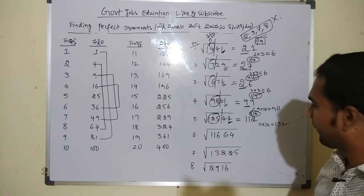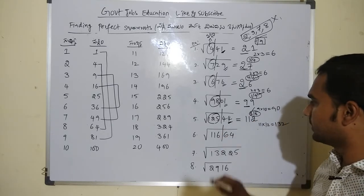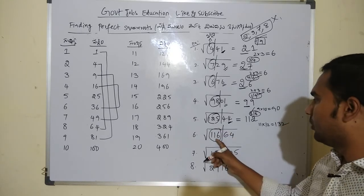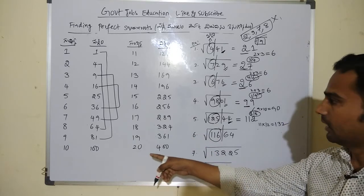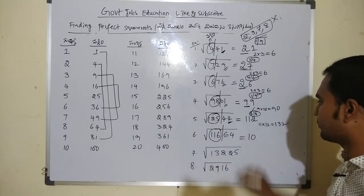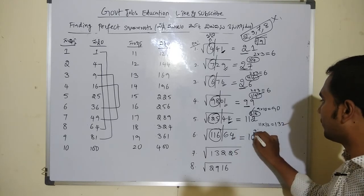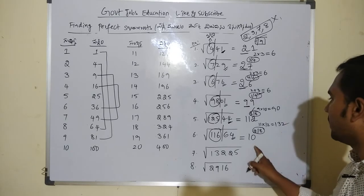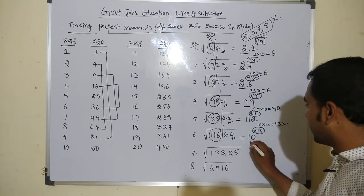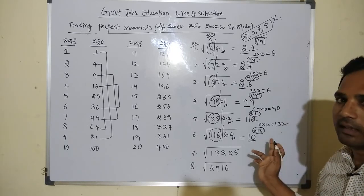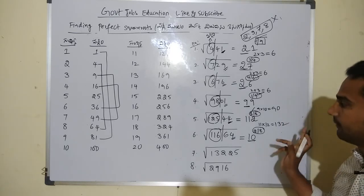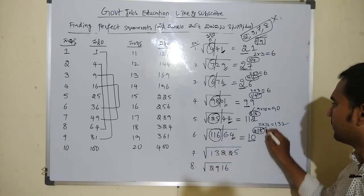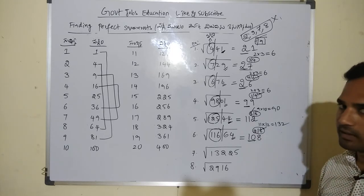Problem: 11664. Left side is 116. The nearest perfect square is 100, so 10 is the root digit. Unit value is 4, giving candidates 2 or 8 — so 102 or 108. 10 multiplied by 11 is 110. Left side 116 is greater than 110, so the greater number is chosen. The answer is 108, and 108 square is 11664.